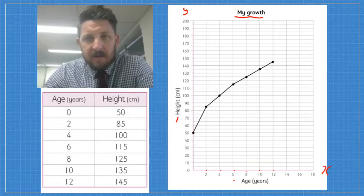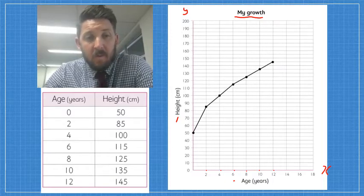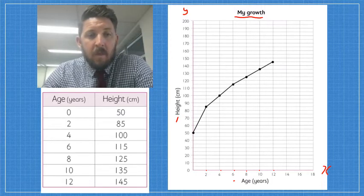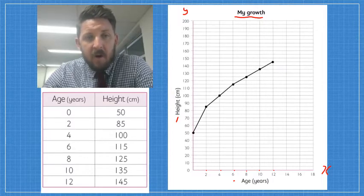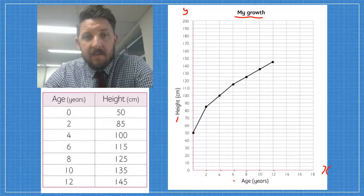Now on this one here, you can see that I'm looking at the data table on the left. The data table is talking about how much somebody grows over a number of years, and it shows you what their height was in centimetres at certain parts of their life. So you can see the first one is when they were born, and their height was 50 centimetres.